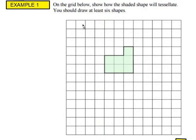So here's a typical example. On the grid below show how you would tessellate the shaded shape and we have to draw at least six shapes. So basically it's very simple. I've got some pre-drawn ones to save time.